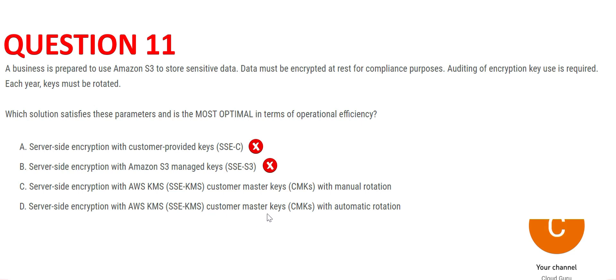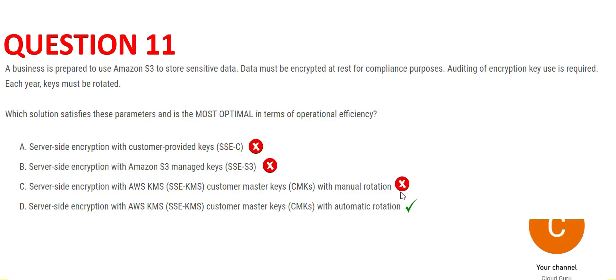As identified from the documentation, automatic key rotation for customer master keys makes Option C correct. The difference between Option C and D is that one is manual rotation and the other is automatic. Obviously automatic is less work; manual is more work, and more work is not good. Operational efficiency means less work, so C is wrong and D is the correct answer.